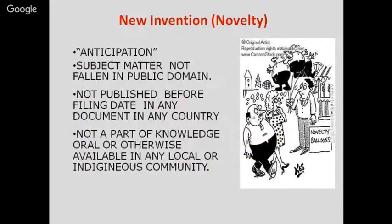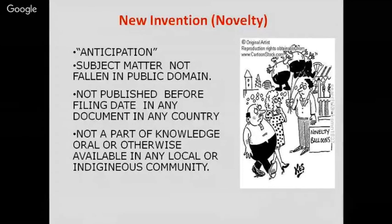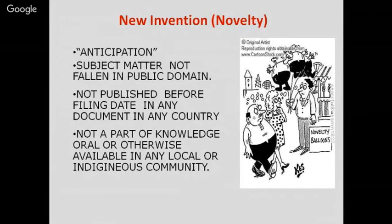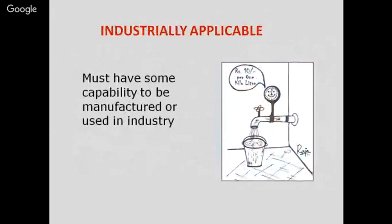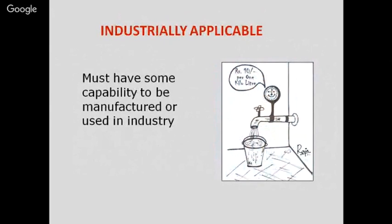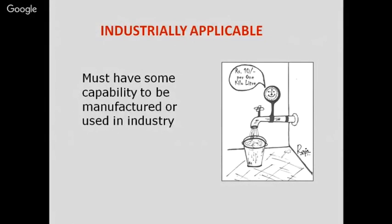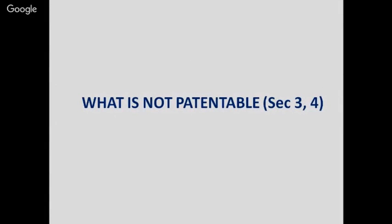A new invention should not be in the public domain before filing the patent. It should not have been published before the filing date in any document in any country, and should not be part of knowledge — oral or otherwise — available in any local or indigenous community. Once a patent application is filed, it is examined to ensure the invention is not available in any public domain in the form of any paper, white paper, newspaper, or other publication. The inventive step involves technical advance as well as economic significance, and the invention should be capable of being manufactured or used in industry.